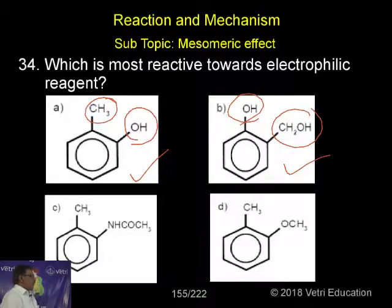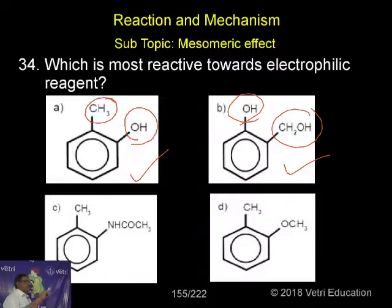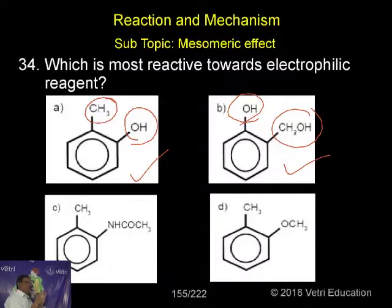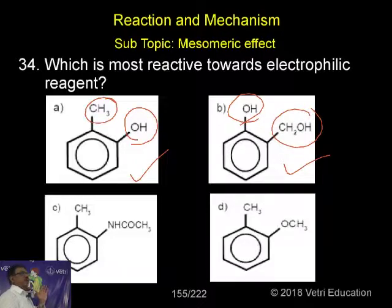Now what we have to think about — for the group CH2OH and CH3 — the order is: NH2 > OH > OCH3 > CH3 > X. This is the order. So among the options, either this group or that group would be the answer based on this priority sequence.